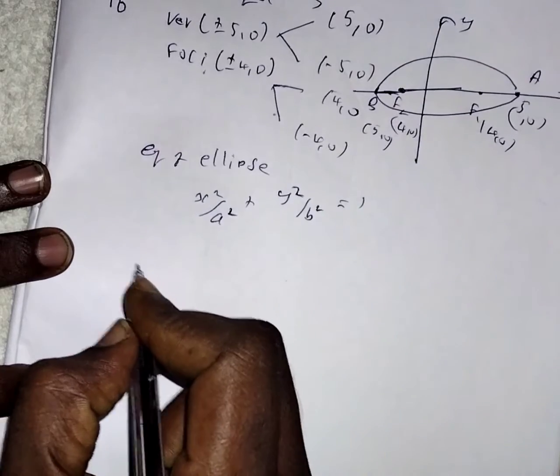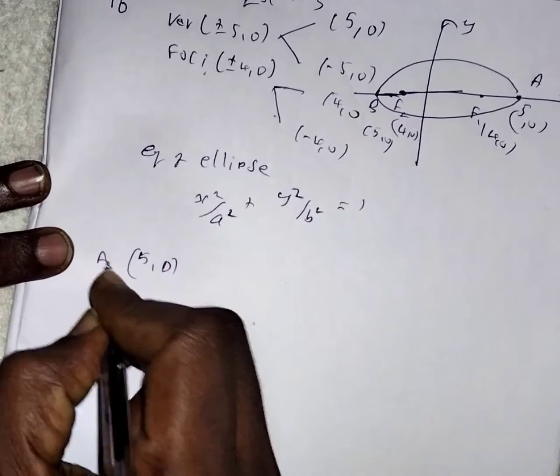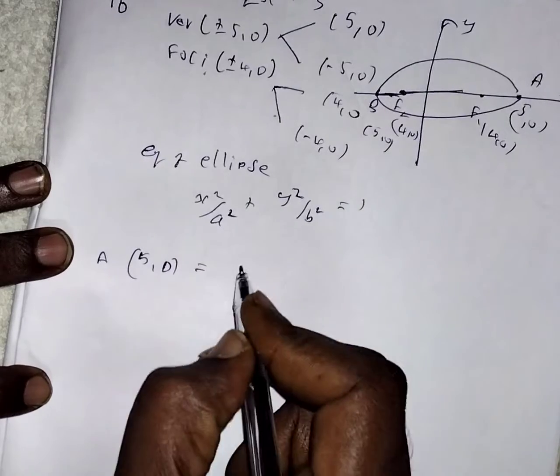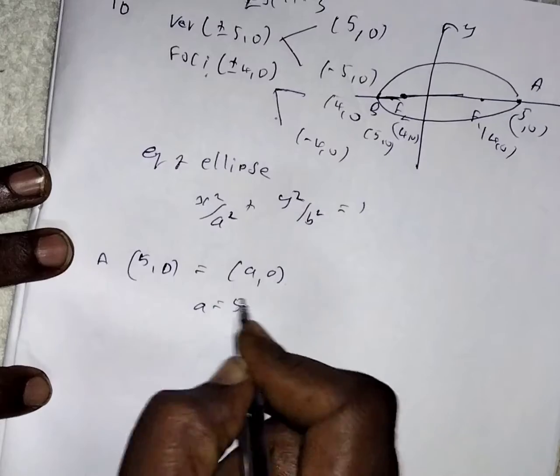With the help of the vertex given at 5 comma 0, if you take as A, so parallel to the x-axis the value is A comma 0. Then we can find the value A equal to 5.